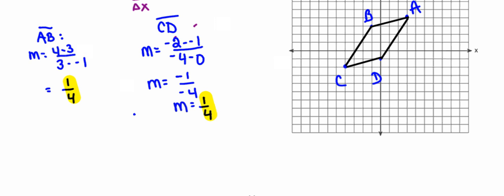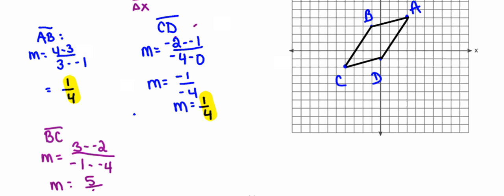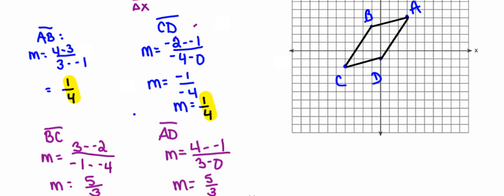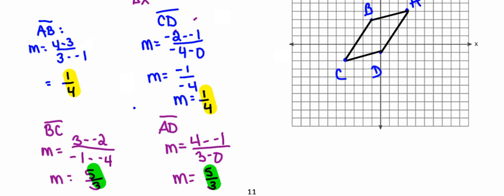Now I'm going to find the slope of the left side and the slope of the right side. My right side is side BC, and I'll identify to the reader that this is the piece I'm finding the slope for. Lastly, I'll find the slope of side AD. My two slopes came out exactly the same, which is as I would expect — if they had come out differently, that would be a clue that I made a mistake and need to go back and revisit my work.